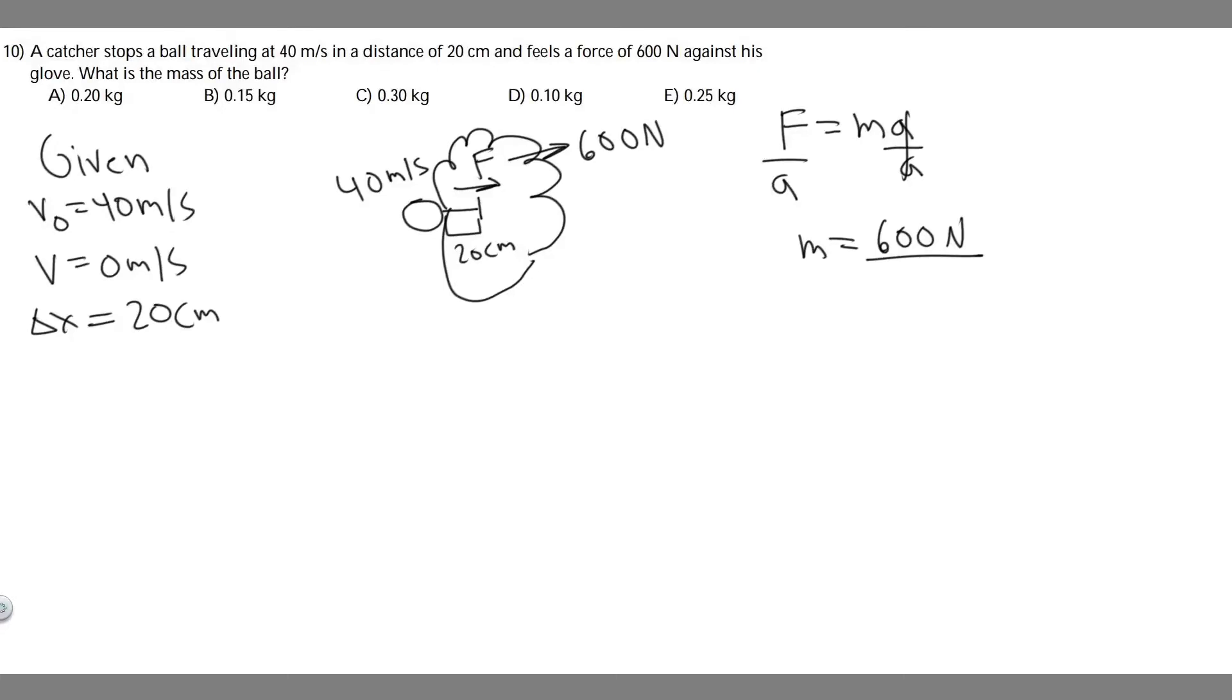In this problem we're told a catcher stops a ball traveling 40 meters per second in a distance of 20 centimeters and feels a force of 600 newtons against his glove. What is the mass of the ball?